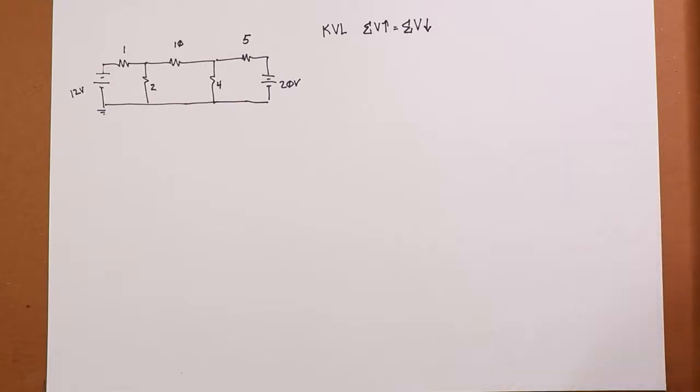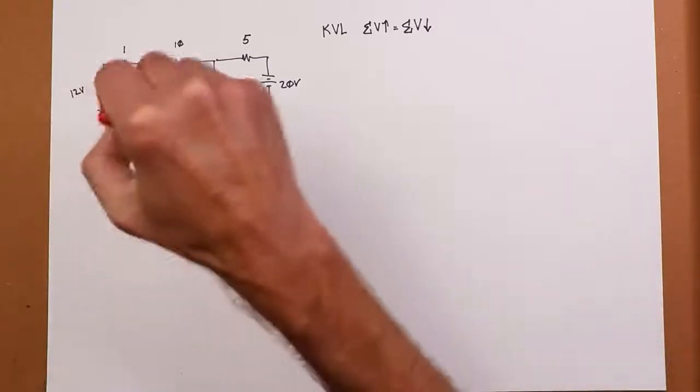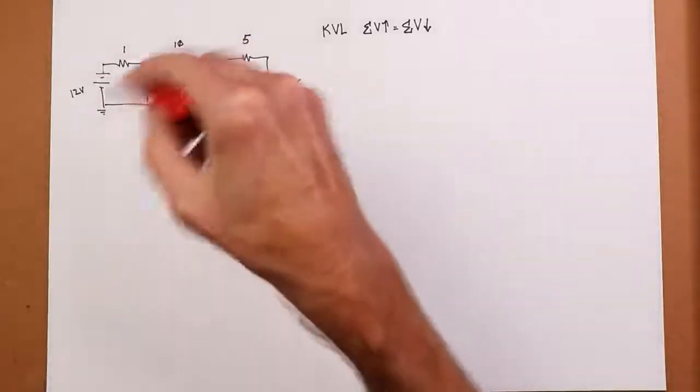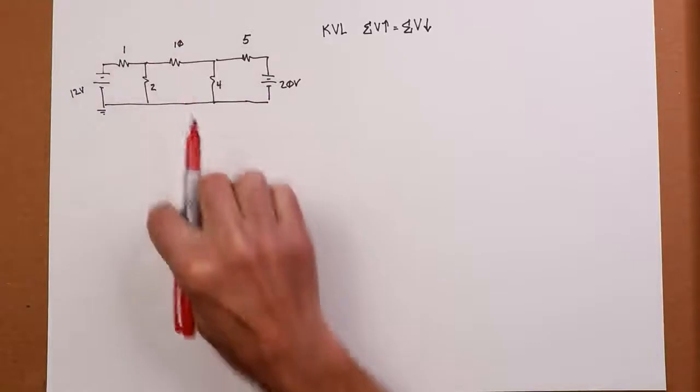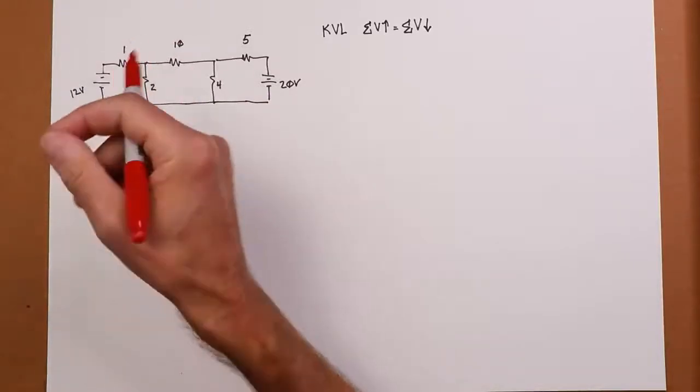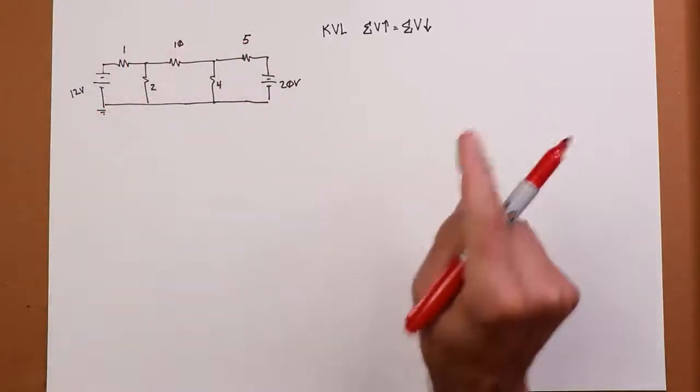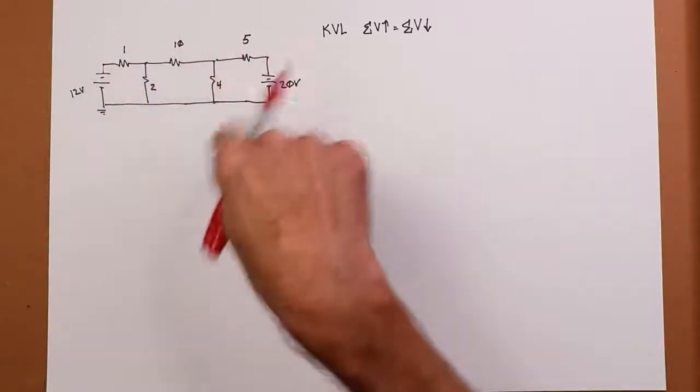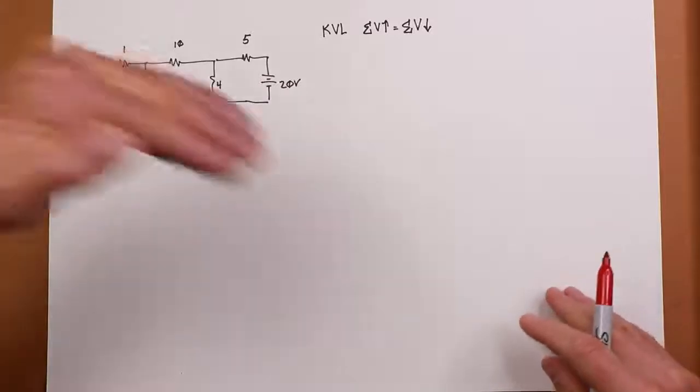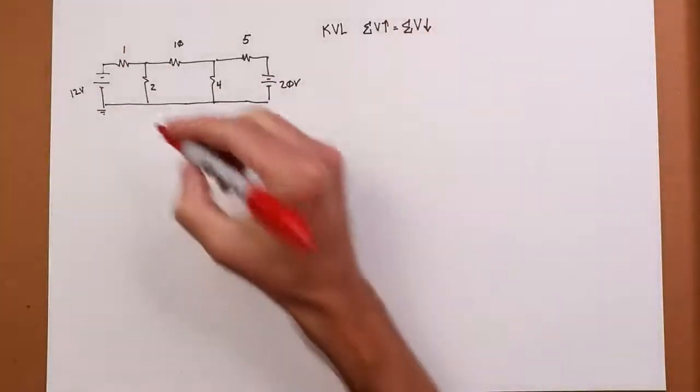Remember, KVL says the summation of voltage rises must equal the summation of voltage drops. So we write these KVL summations, and then we simplify them or write them in terms of Ohm's law. By convention, we write these little loops, these loop currents. Mesh currents are not branch currents. They might coincide with a branch current, but they're not the same thing.